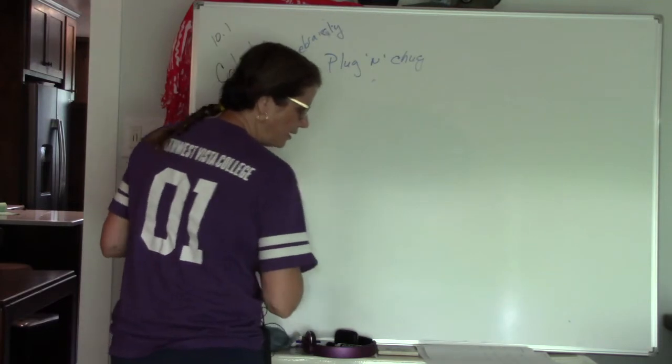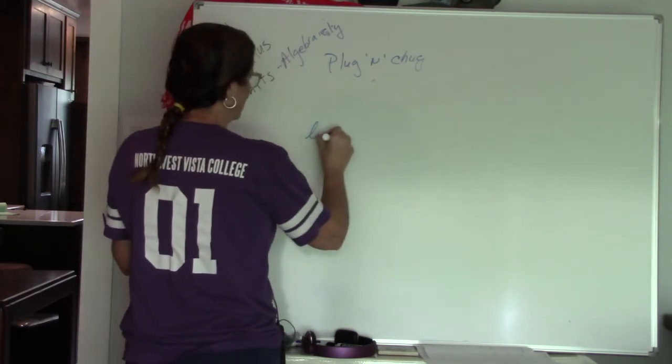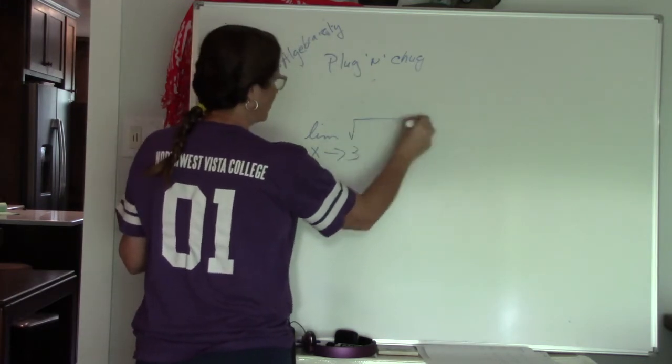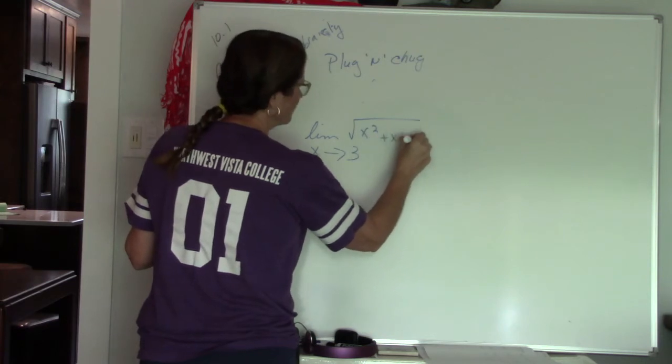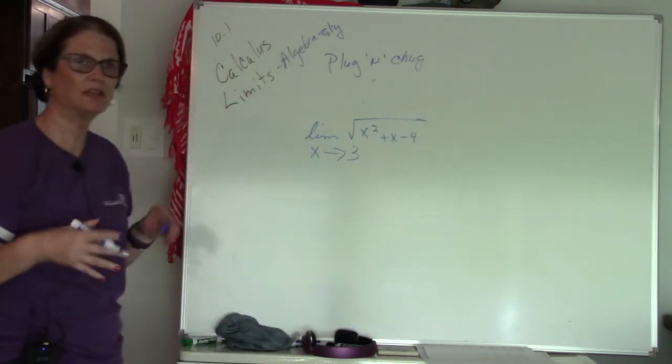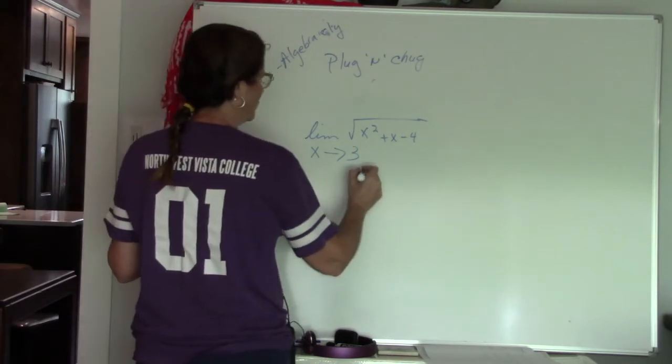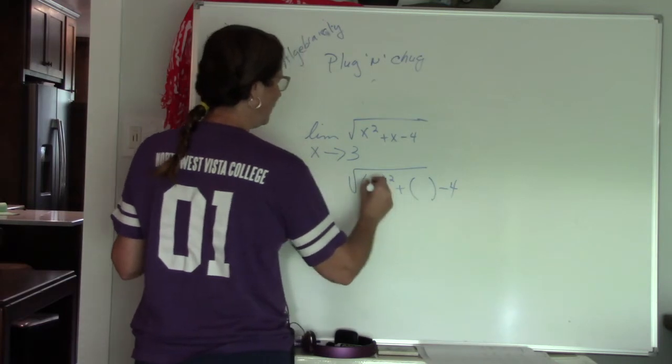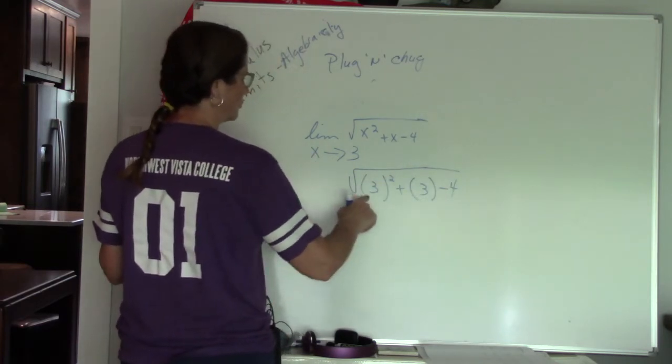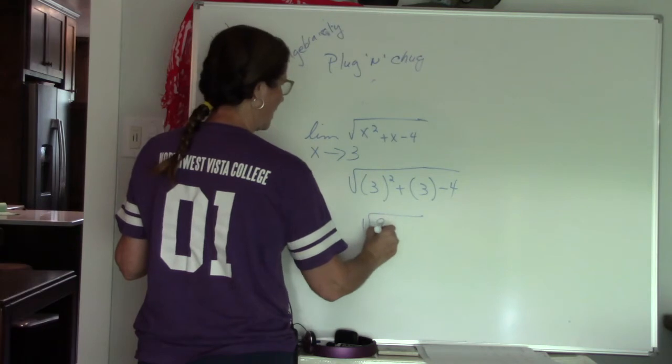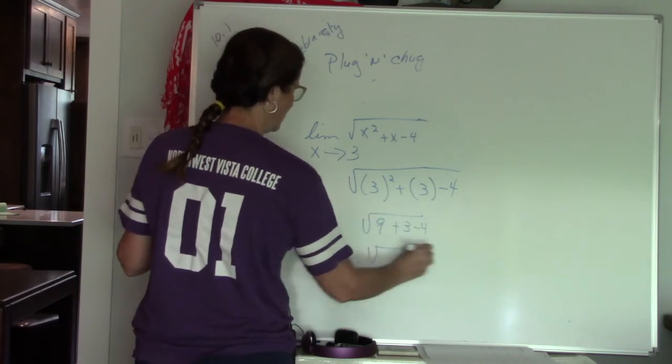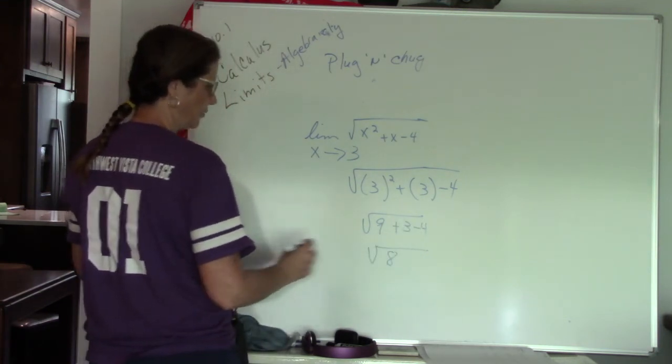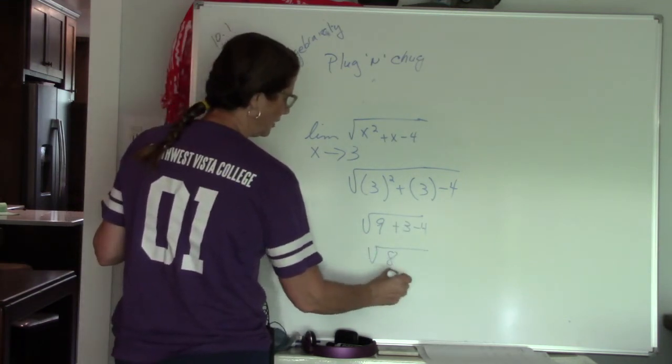Okay. How about the limit as x approaches 3 of the function x squared plus x minus 4. So again, this is algebraically. You're just plugging in the value, chugging out the answer. So wherever there's an x, I'm going to plug in my number 3 and chug out the answer. So 3 squared is 9 plus 3 minus 4. So 9 plus 3 is 12 minus 4 is 8. So I have the square root of 8. So remember, you're simplifying.